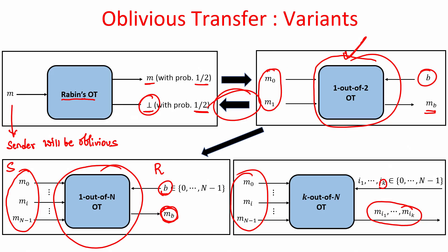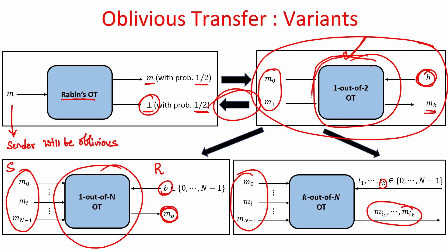One might ask why the receiver cannot simply participate in the OT twice with B=0 and B=1 to get both messages. That is possible, but in the MPC use case, OT instances will be over inputs decided during the protocol execution — every time the same sender and receiver engage in OT, the inputs and choice bits will all be different. It can also be shown that a secure 1-out-of-2 OT gives a secure k-out-of-n OT.